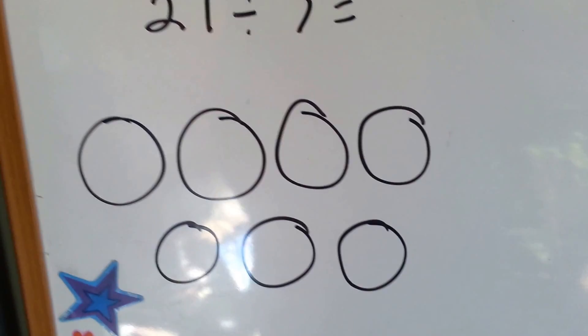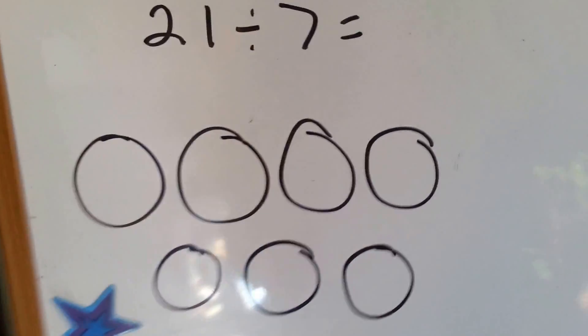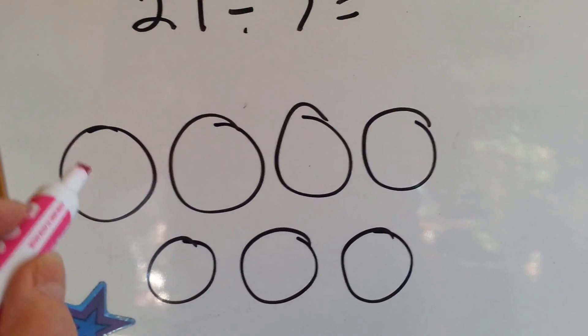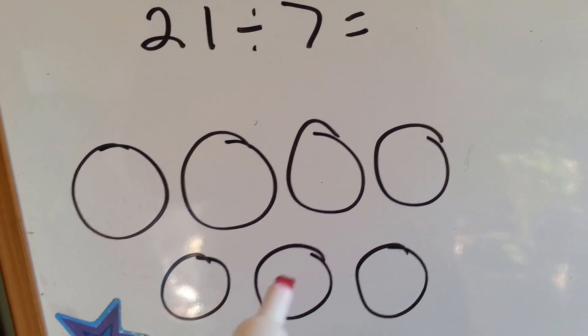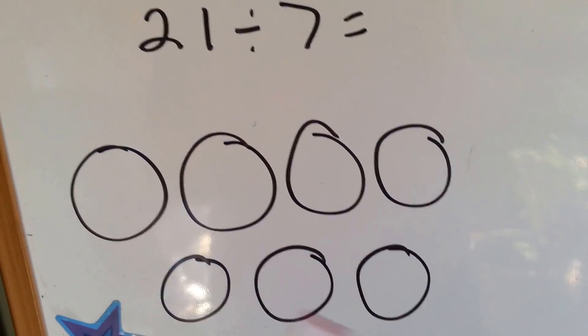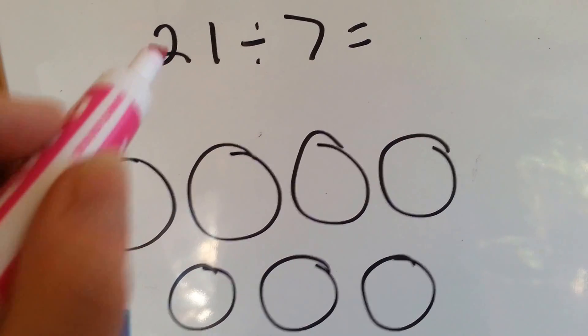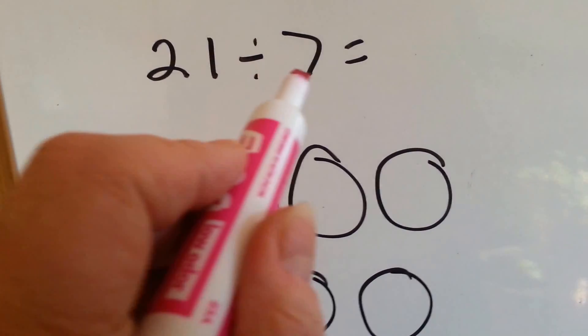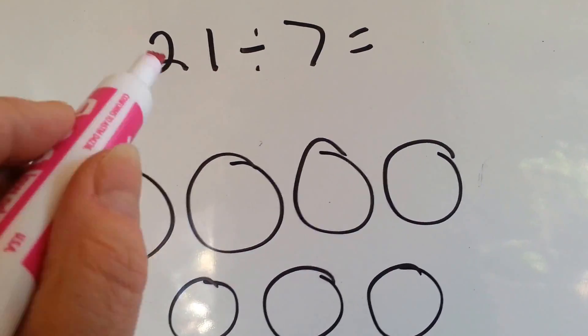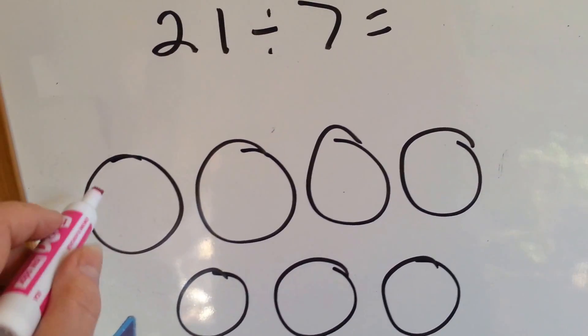We've got 21 divided by 7. In this method, what we're going to do is we're going to take turns putting a dot in each group until we've filled them and counted to 21. We've got 7 groups because we've got a 7 here and we're going to put in 21 dots taking turns in each group. Ready?